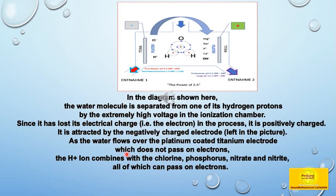In the diagram shown here, the water molecule is separated from one of its hydrogen protons by the extremely high voltage in the ionization chamber. Since it has lost its electrical charge in the process, it is positively charged and is attracted by the negatively charged electrode. As the water flows over the platinum-coated titanium electrode, which does not pass on electrons, the H+ ion combines with the chlorine, phosphorus, nitrate and nitrite, all of which can pass on electrons.